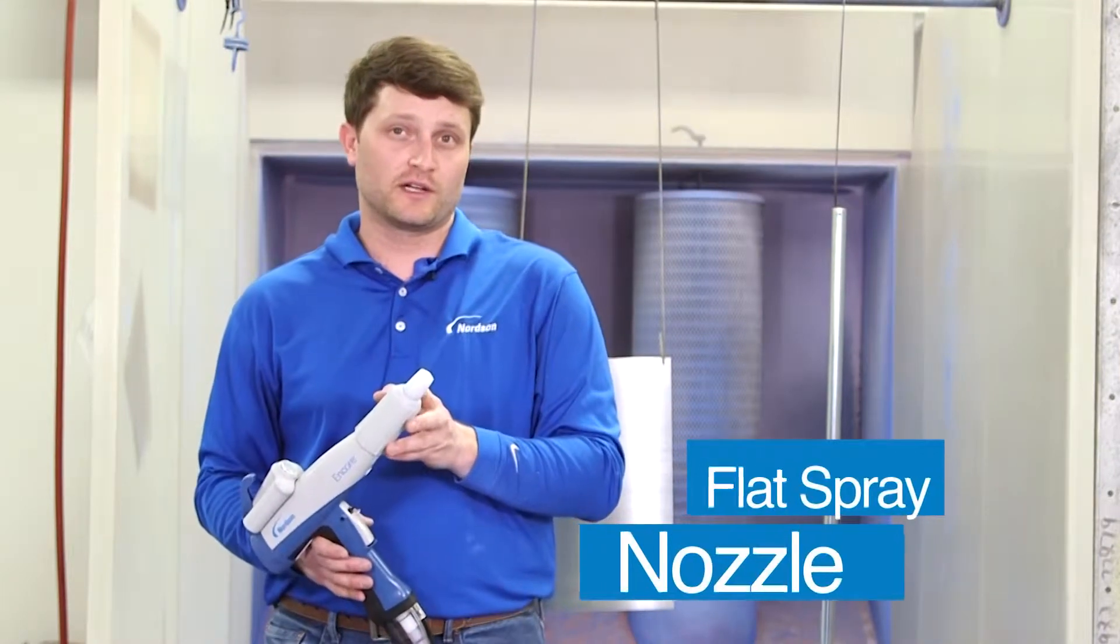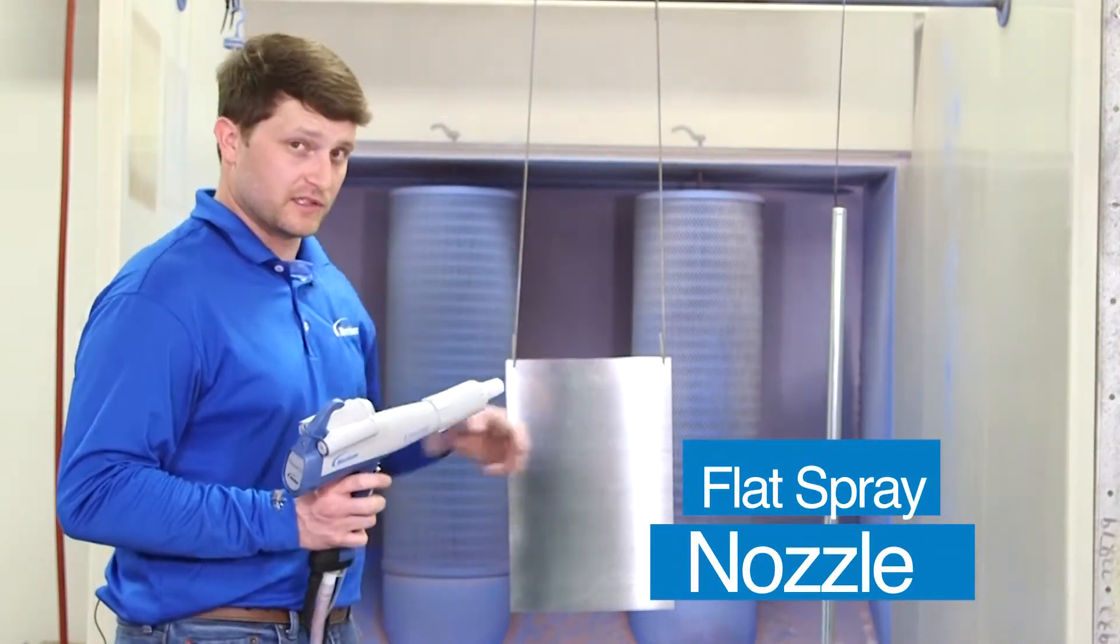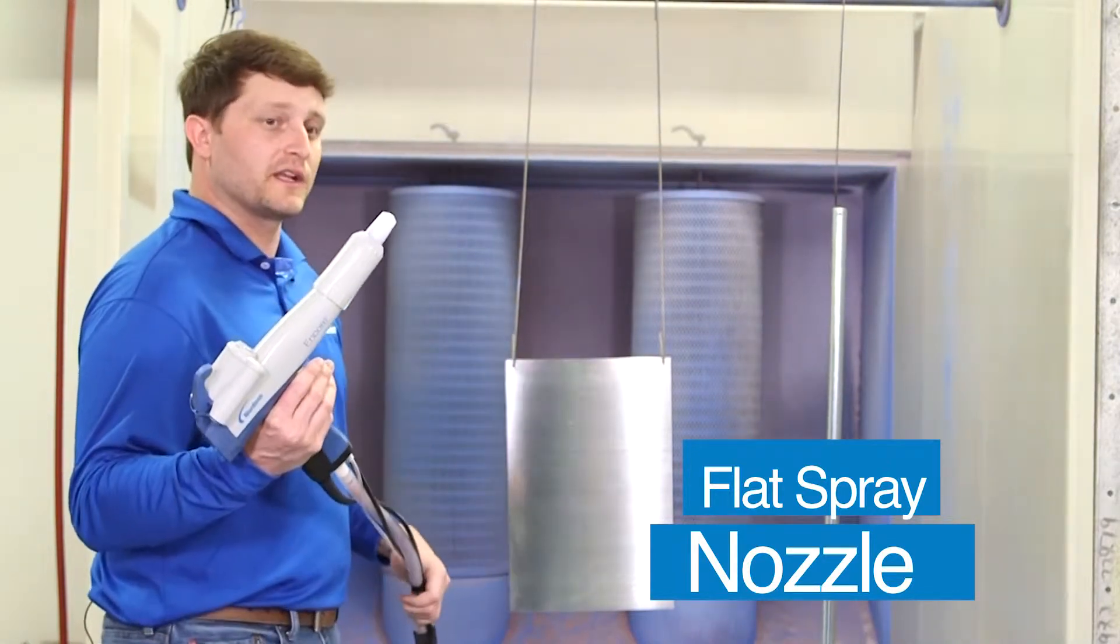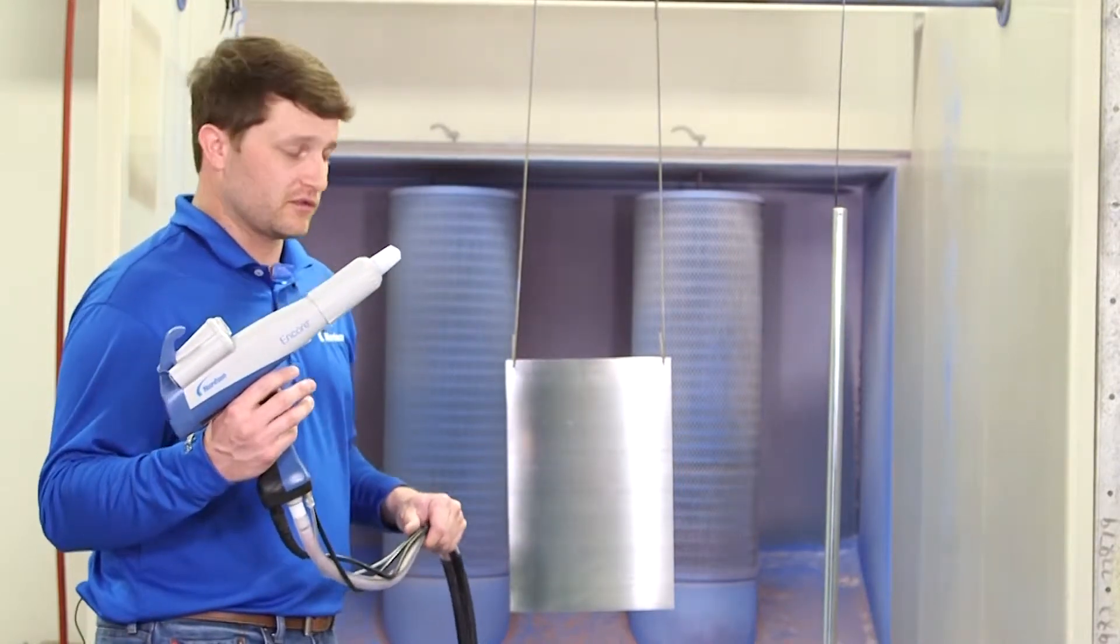For this setup, we have a four millimeter flat spray nozzle, and we're going to coat a flat panel compared to a piece of tubular metal. What you're going to see with the flat spray nozzle is you've got a wider spray pattern; you can get wider coverage across the part.